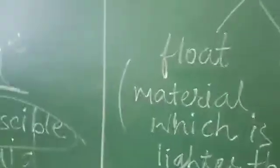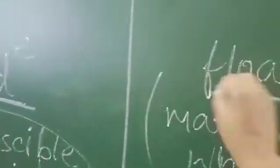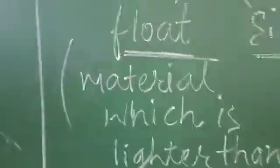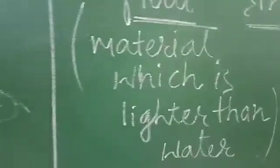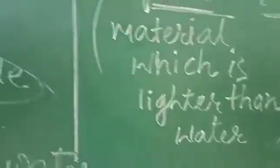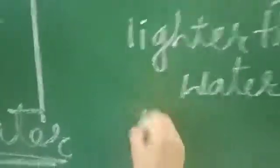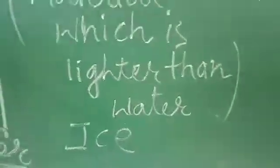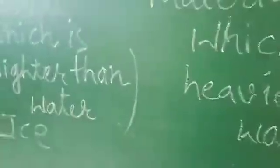Next is flotation. A material may float in water or sink in water. This depends upon its density. Material which is lighter than water floats on the surface of water, like ice and a block of wood.